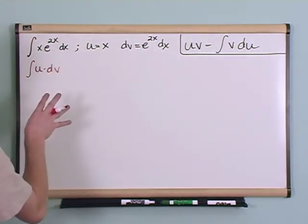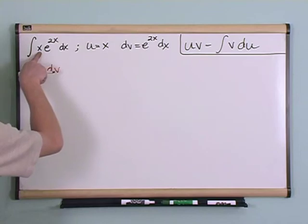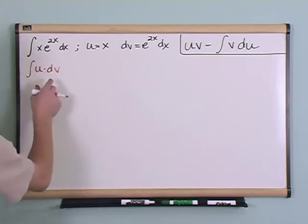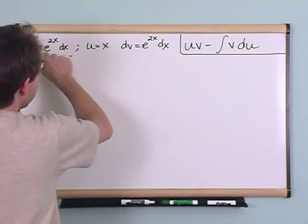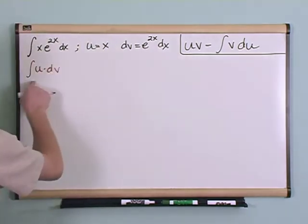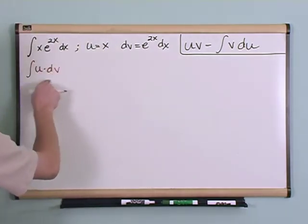So every integration by parts you're going to need to start out by defining a u, which is going to be some portion of it, and then you're going to have to define some dv which is going to be everything else left over.